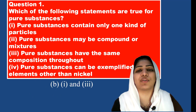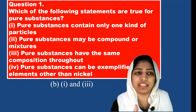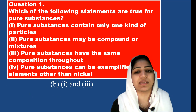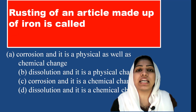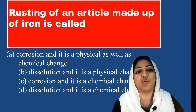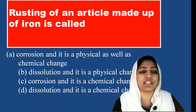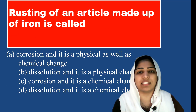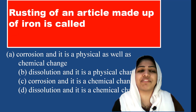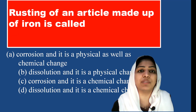The correct answer has statements 1 and 3 as true. Next question: rusting of an article made of iron is called what? Iron articles are rusting — this is called corrosion.